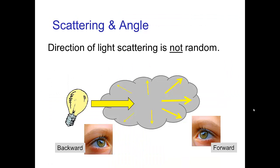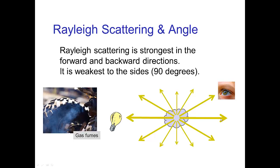Scattering is not entirely random. The direction that light is scattered depends on the type of scattering — sometimes it's scattered more in the forward direction, sometimes more in the backward direction. With Rayleigh scattering, the strongest scattering is in the forward direction and in the backward direction, and it's least in the side-to-side direction — weakest 90 degrees from the light source.